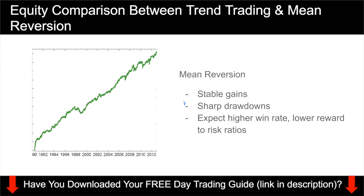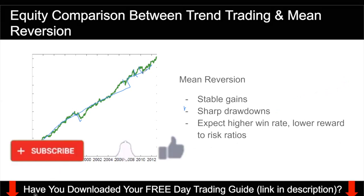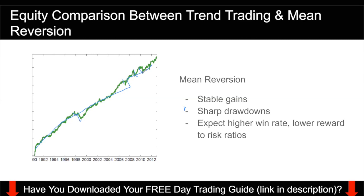When you are trading a mean reversion strategy, you can expect to see very stable gains — the equity curve is very stable. But when there is a drawdown, it tends to be very sharp. Normally your drawdowns happen when the market is trending, because a mean reversion strategy bets that price goes back to the mean. But in a trending scenario, the market doesn't go back to the mean — it just keeps trending. That's where a mean reversion strategy gets hit, and that explains the sharp drawdowns.